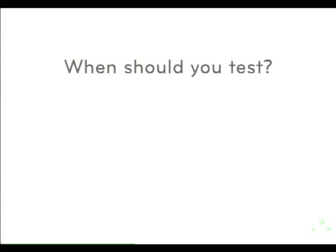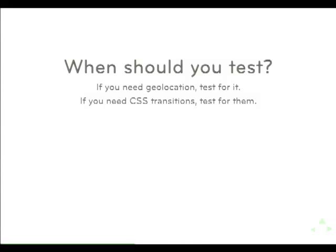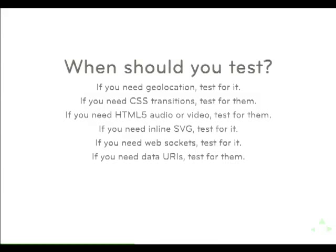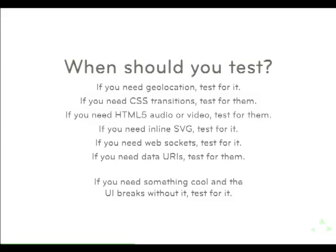So when should you test? If you have a location-based app and this is mission critical information, you should test for geolocation. If you need CSS transitions and you're providing vital UI movement, you should test for them and maybe fall back to jQuery animation. If you need HTML5 audio or video, test for them. Inline SVG, web sockets, data URIs — are you noticing a pattern? Test for everything that is vital and is going to break your UI if it's not present. When you test for it, you can either enhance the UI or create a fallback behavior.